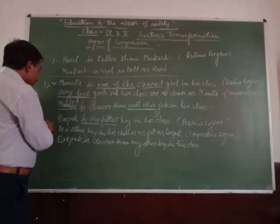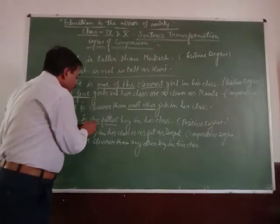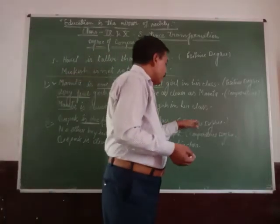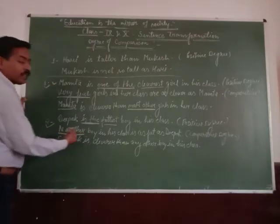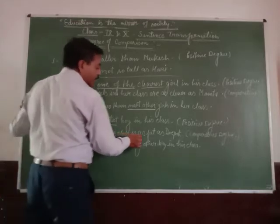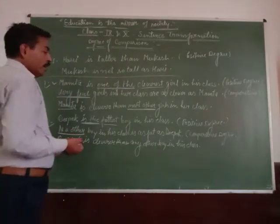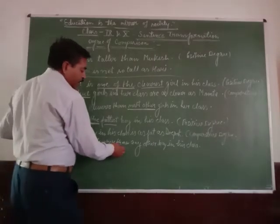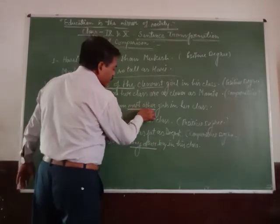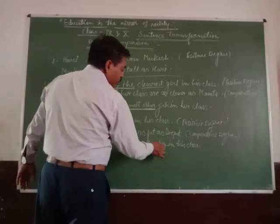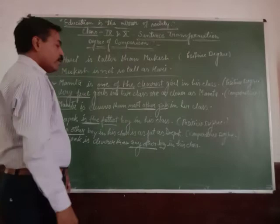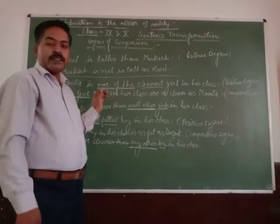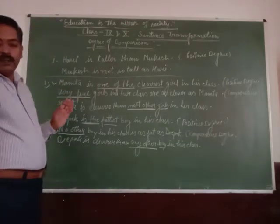In the second type of Superlative sentence, when 'the' is given, change into Positive Degree by starting with 'no other.' For example: 'No other boy in his class is as fat as Deep.' When changing to Comparative Degree: 'Deep is cleverer than any other boy in his class.' Note: use 'any other' for second type and 'most other' for first type.